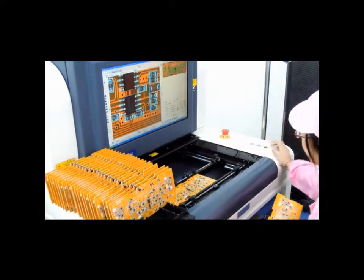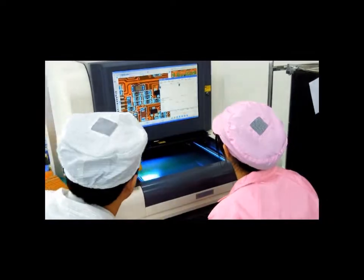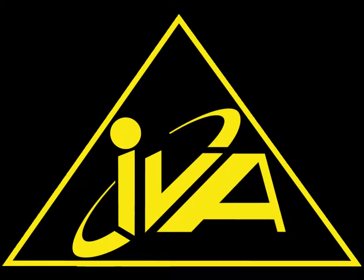Some placement machines are even capable of placing more than 100,000 components per hour.